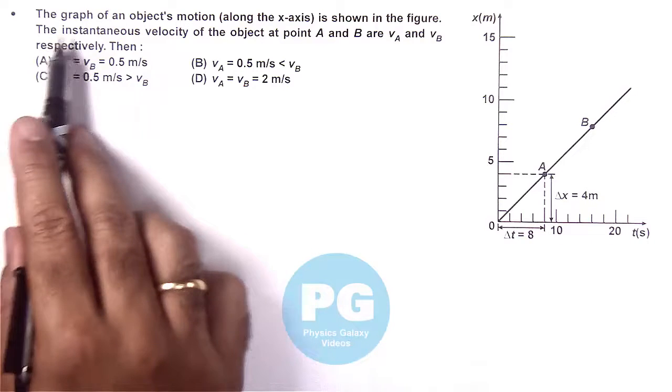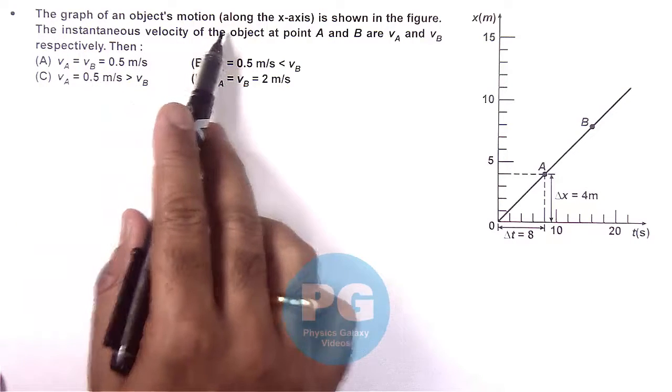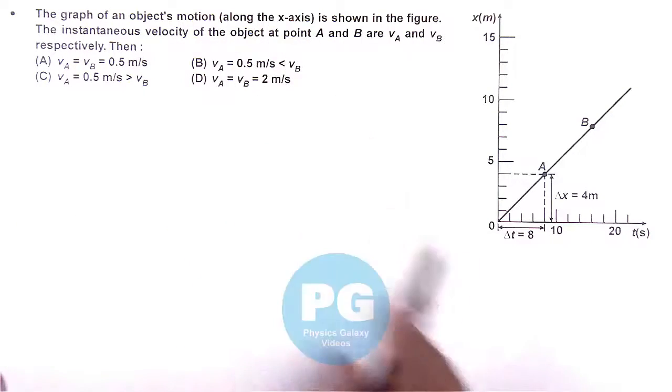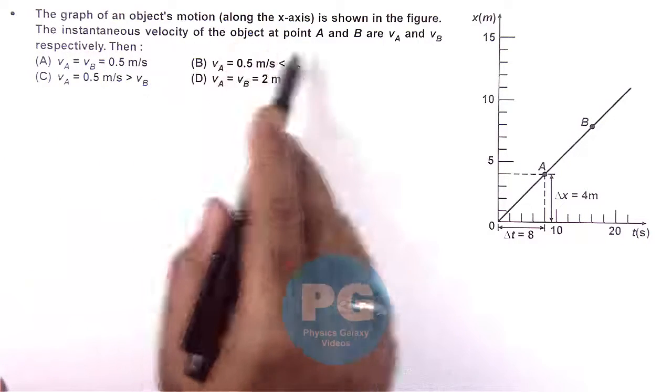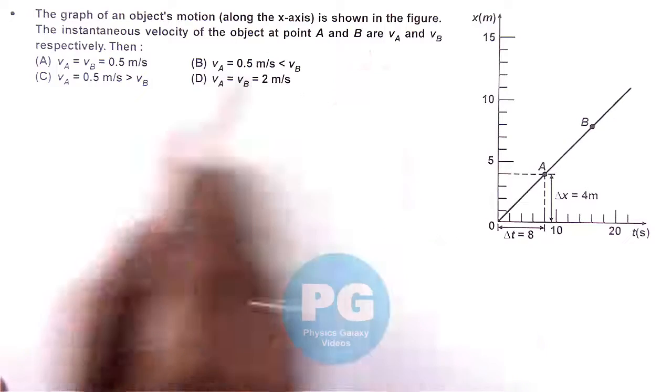In this question we are given that the graph of an object's motion along the x-axis is shown in the figure. It is asking the instantaneous velocity of the object at point A and B, which are V-A and V-B respectively.